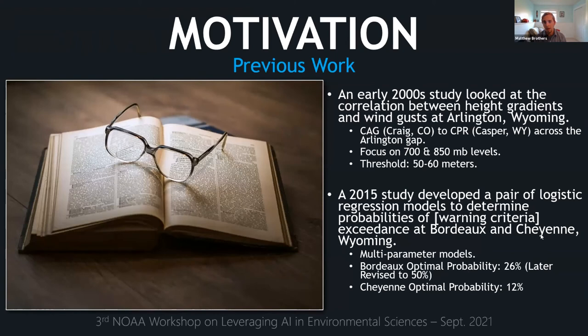Previous work by our office in the early 2000s correlated height gradients with wind gusts at the Arlington, Wyoming gap location. They found a Craig, Colorado to Casper, Wyoming height gradient at the 700 and 850 millibar levels was a good predictor, especially around the 50 to 60 meter range for high wind gusts. Multi-parameter models with three to five predictors were also developed for Bordeaux gap location and Cheyenne, Wyoming to predict probability of exceeding local high wind criteria. These are currently what operational forecasters use when making decisions on high wind warnings.